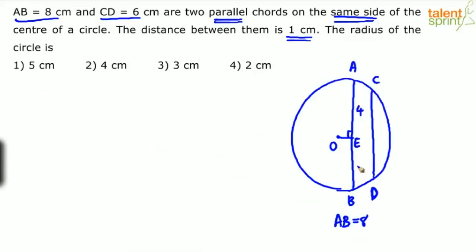Similarly, from the center if you drop a perpendicular on the second chord CD, let's say it meets at point F. We know that total CD is equal to 6 centimeters. So this perpendicular from the center will bisect CD. So CF is half of 6, which is 3, and DF is also half of 6, which is 3.